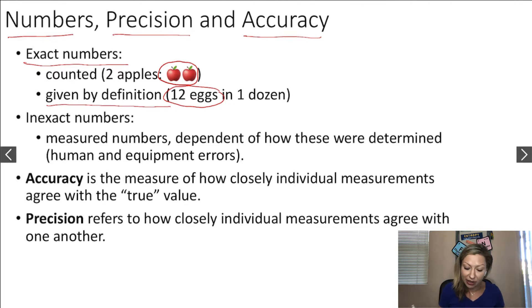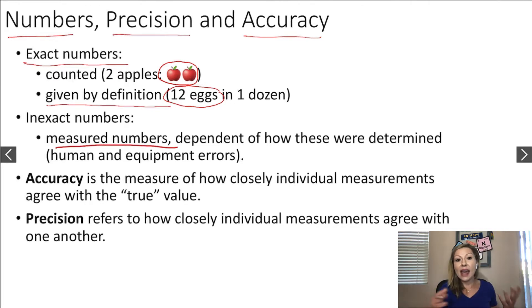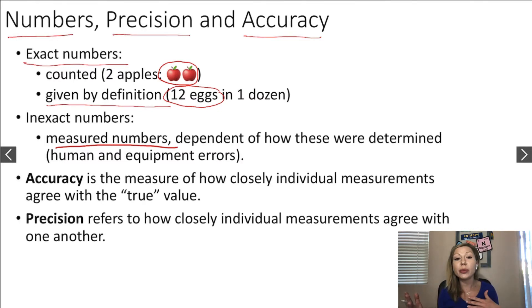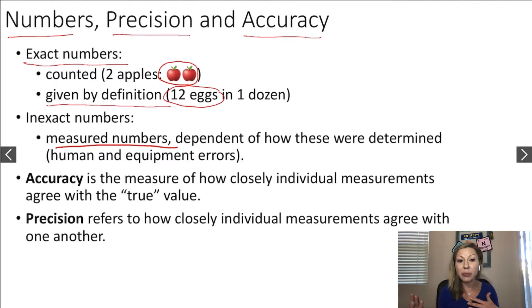Inexact numbers are measured numbers, and they depend on how they were determined. There might be a human error or an equipment error, so those are not exact numbers.